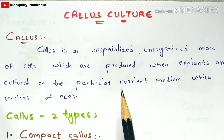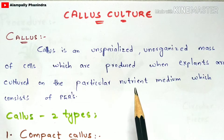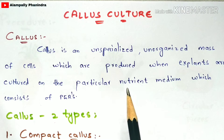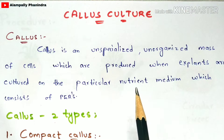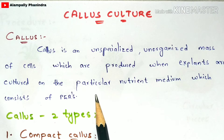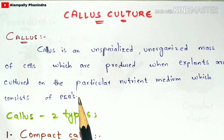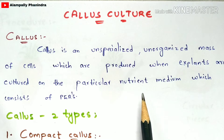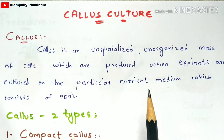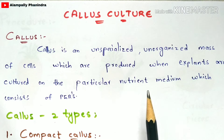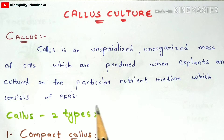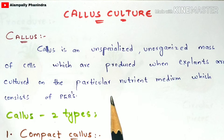The main function of the nutrient medium is to supply nutrients to the explant. You select an explant and place it in the nutrient medium, which contains plant growth regulators and various nutrients. Once the explant absorbs those nutrients, it develops into the callus. That is the basic procedure of callus culture.